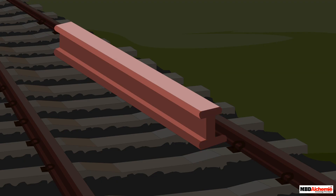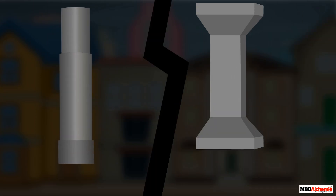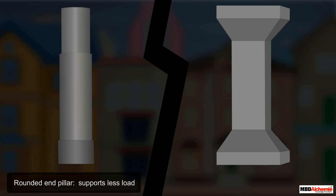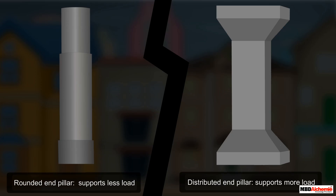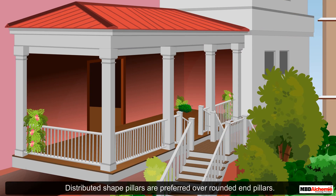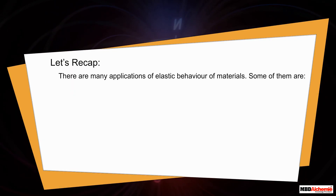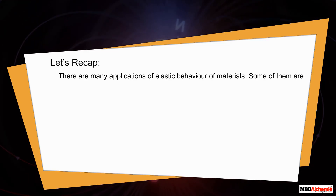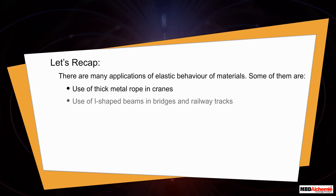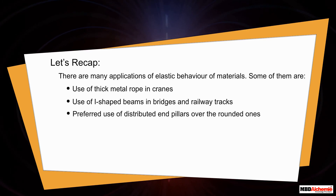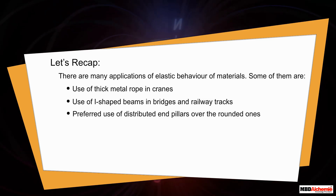Not only beams, but pillars or columns in buildings and bridges are also designed to reduce stress. A pillar with rounded ends supports less load than one with a distributed shape at the ends, so distributed-shape pillars are preferred. To recap: key applications of elastic behavior include thick metal ropes in cranes, I-shaped beams in bridges and railway tracks, and distributed-end pillars over rounded ones.